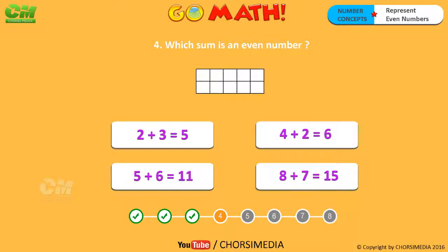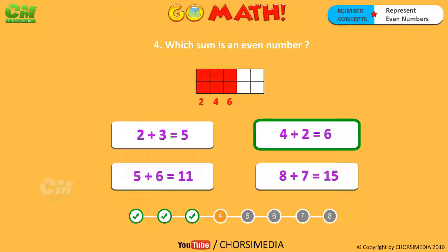Which sum is an even number? You are right! The correct answer is four plus two equals six. Two, four, six — six is an even number.